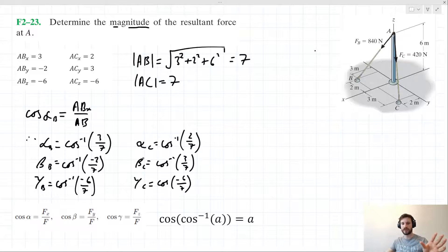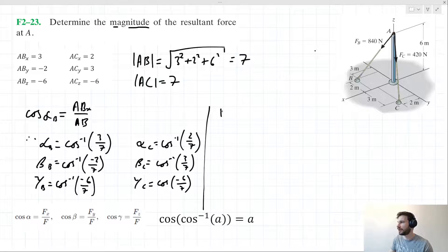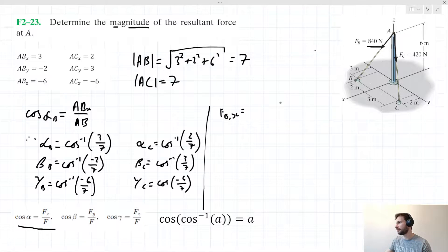Now we have the alpha, beta, and gamma values for forces B and C. We can use these to solve for the X, Y, and Z components of each force. Let's start with FB. We'll call this FB_X. Rearranging the first equation and multiplying both sides by F, where F equals 840, we get FB_X equals 840 times cosine of alpha B.